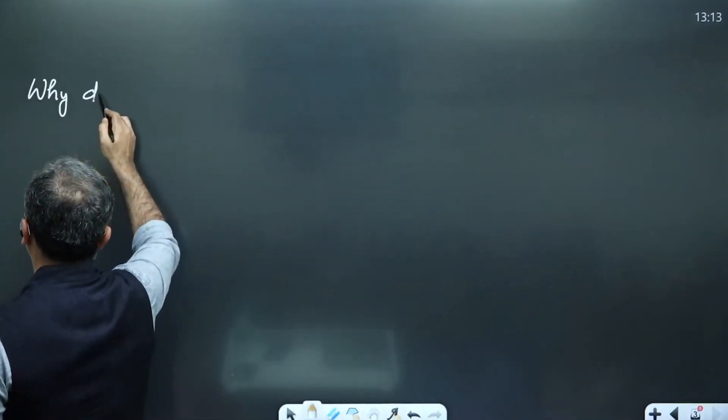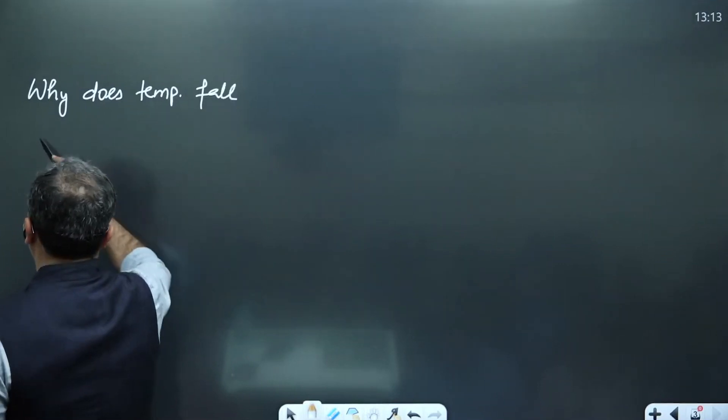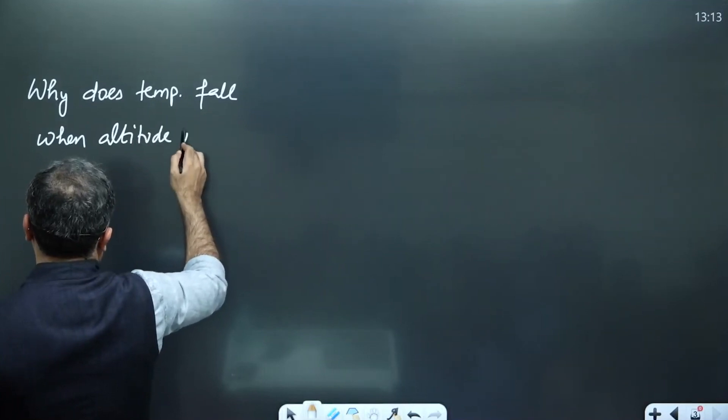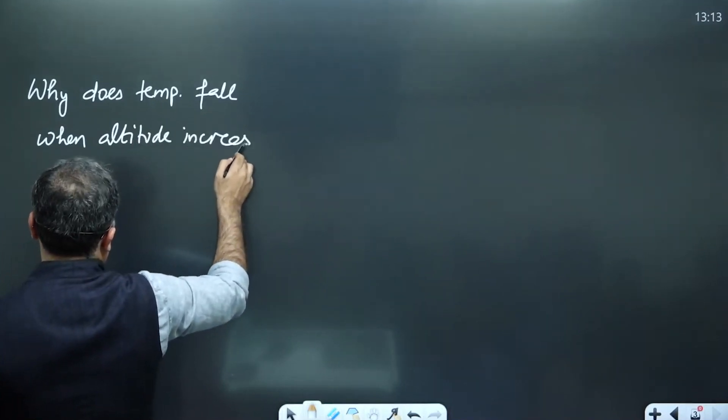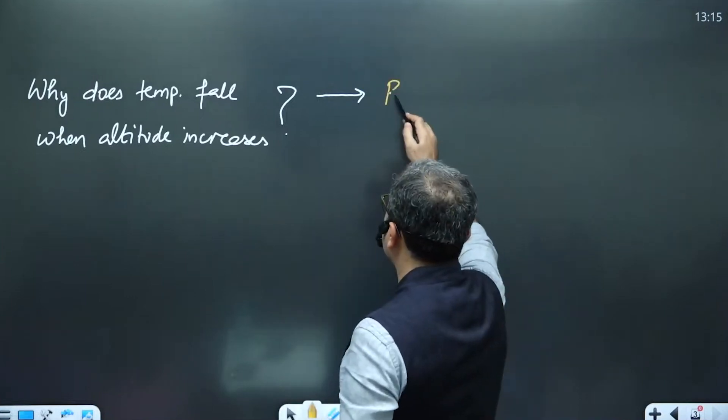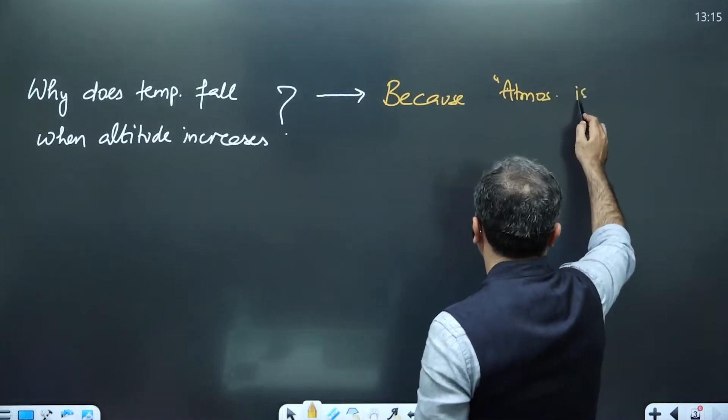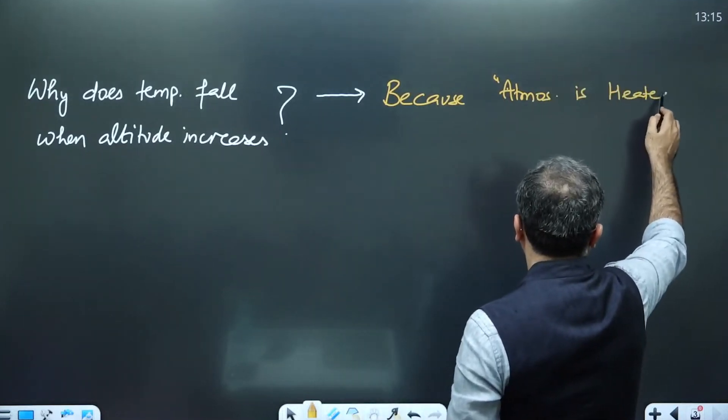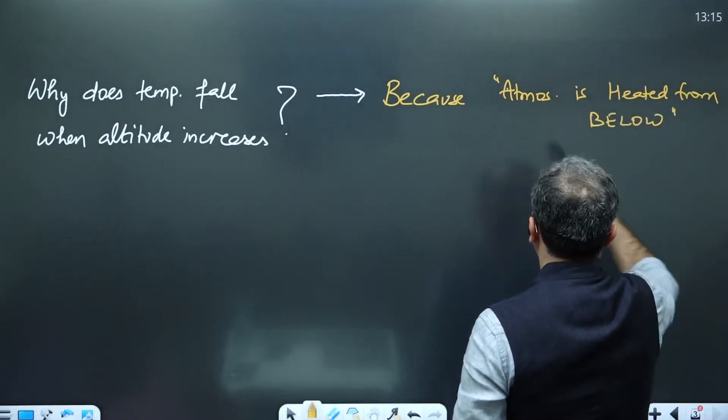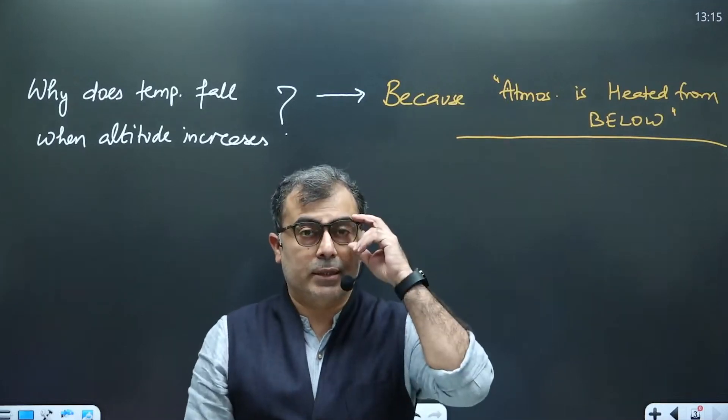Why does temperature fall when altitude increases? Because atmosphere is heated from below. This is the reason. Now we will try and understand this statement. What does it mean?